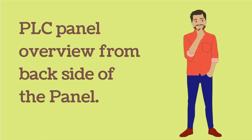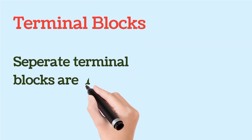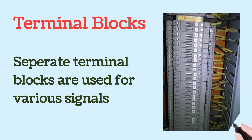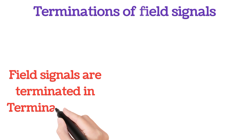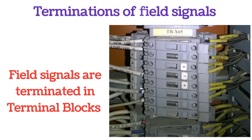Now we will discuss the PLC panel overview from the back side. First we will see the terminal blocks — separate terminal blocks are used for various signals. The main reason for using a terminal block is termination of field signals. Field signals are terminated in terminal blocks; terminated means connected. As you can see, field signals are connected in terminal blocks, or TB — TB is the short form of terminal block. All incoming and outgoing signals are connected in different TBs.